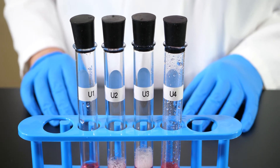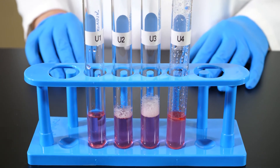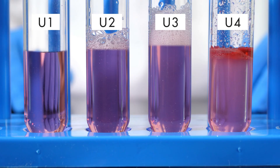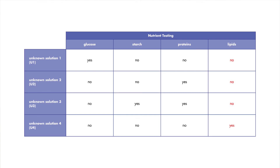After waiting approximately 5 minutes, we examine the results. The sample containing unknown solution 4 has separated into a dark red layer above a lighter red layer, which means lipids are present in unknown solution 4. Since none of the other unknown solutions separated into layers, we know that lipids are not present in those solutions. Record your observations in your lab journal.